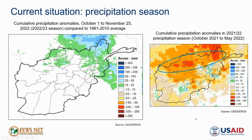Before turning to current food security outcomes, I want to touch quickly on the start of the 2022-2023 precipitation season. The first map shows cumulative precipitation totals in the season to date as of November 25th, presented as the difference from the long-term average. In contrast to previous forecasts, much of the north and northeast has received above average precipitation to date, which is a positive sign for the planting season. The map on the right shows cumulative precipitation for the entire previous season for comparison, in which the northern rain-fed belt experienced some of the worst precipitation deficits.